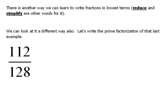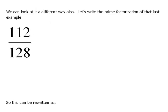There is another way that we can learn to write fractions in their lowest terms — or reduce or simplify, as other words for it. Let's look at the same example that we did in the last video, where we had 112 over 128. We did this very slowly in the last one, dividing by 2 top and bottom repeatedly. Sometimes, especially with larger numbers, it can be a little scary to figure out what goes into the numerator and denominator. So, there is a more systematic way of doing it, and this involves prime factorizations.